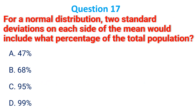For a normal distribution, two standard deviations on each side of the mean will include what percentage of the total population? The correct answer is C: 95% of the total population.